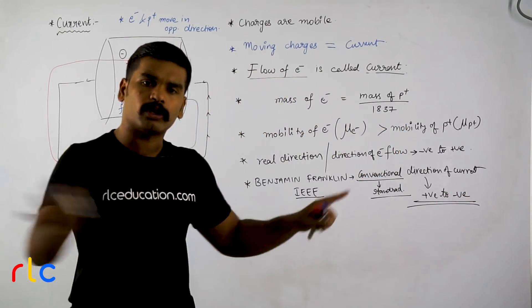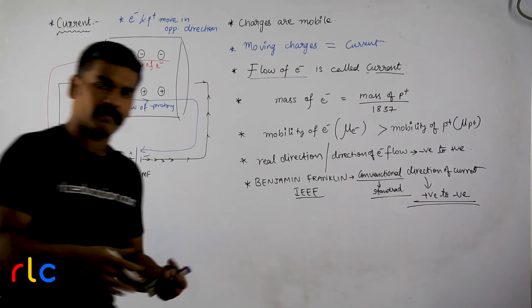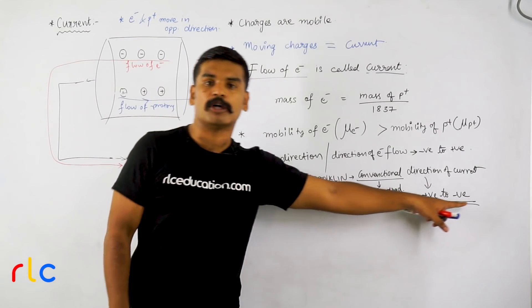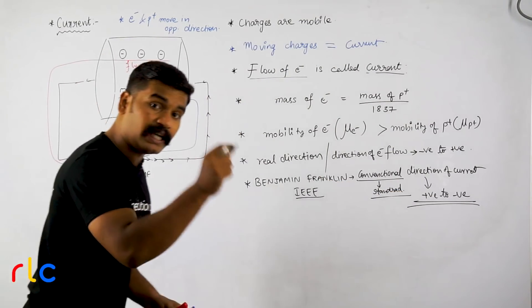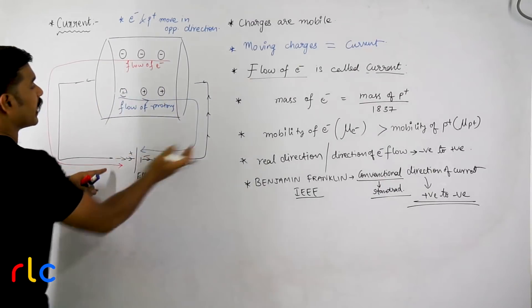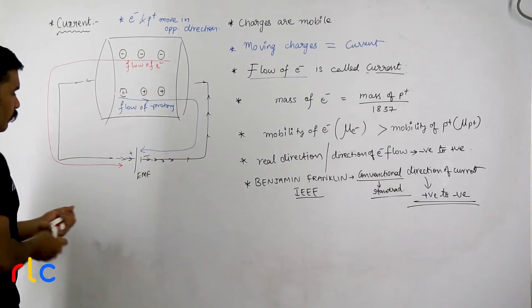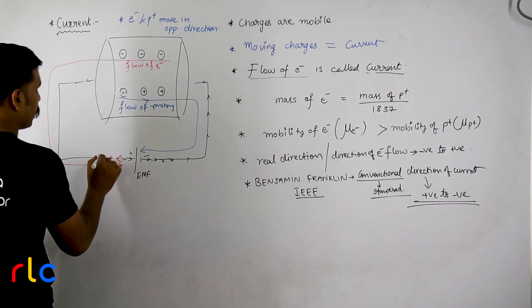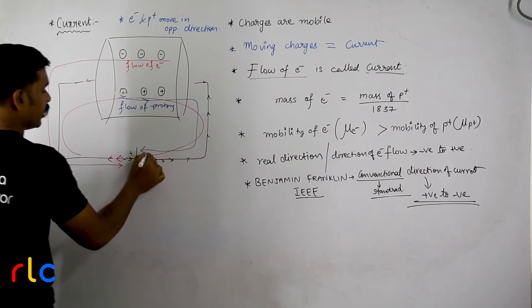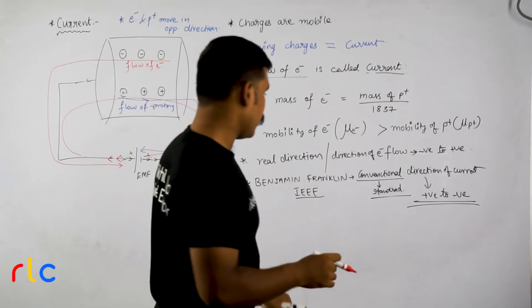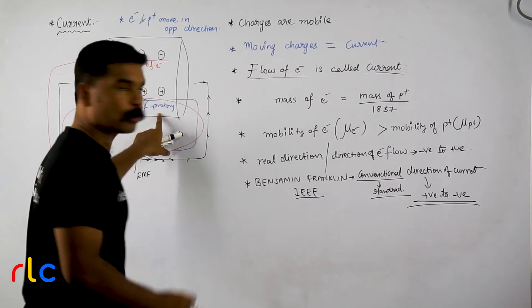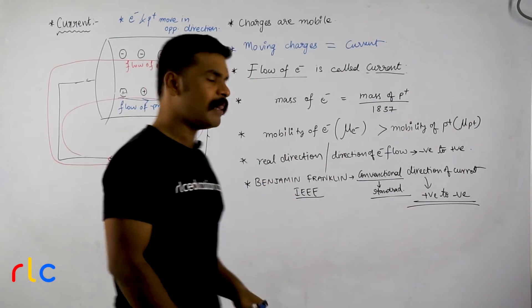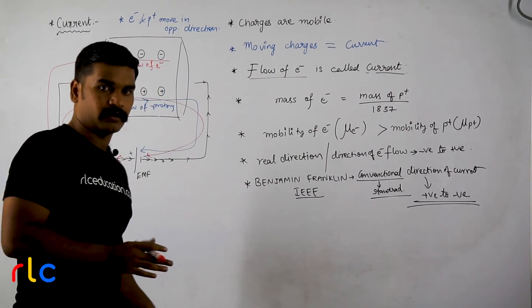The conventional direction of current is proposed by IEEE (International Institute of Electrical and Electronics Engineering), the body that specifies standards for scientists and engineers worldwide. As per Benjamin Franklin's proposal, conventional current flows from the positive terminal to the negative terminal. This is the direction we use throughout circuit analysis. The real direction is from negative to positive, but conventionally we use positive to negative.